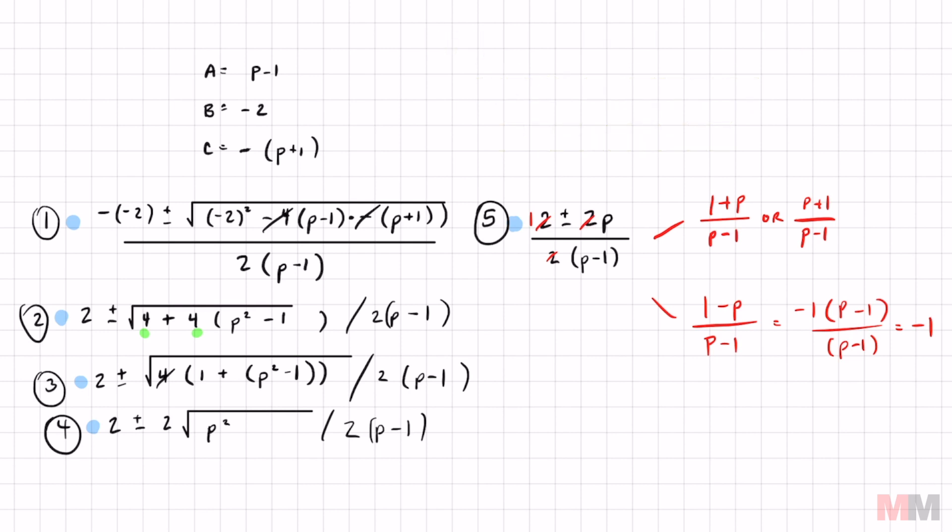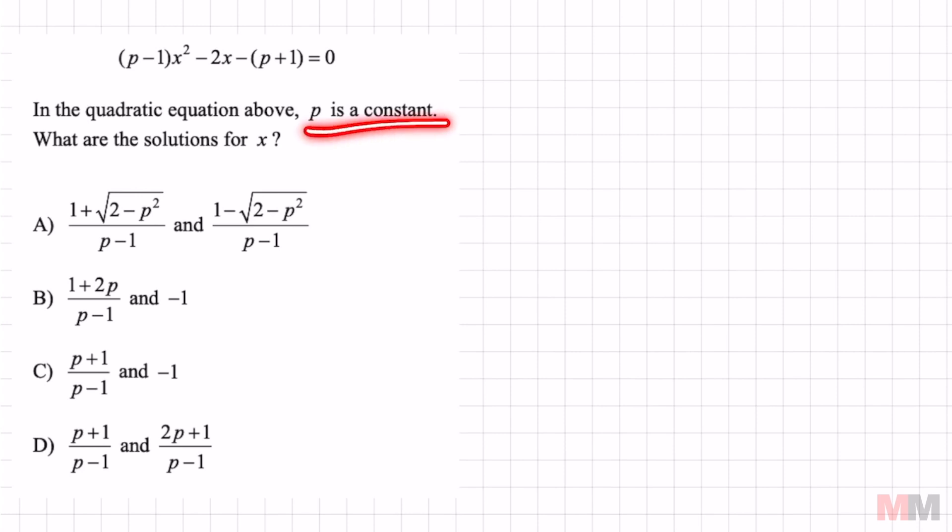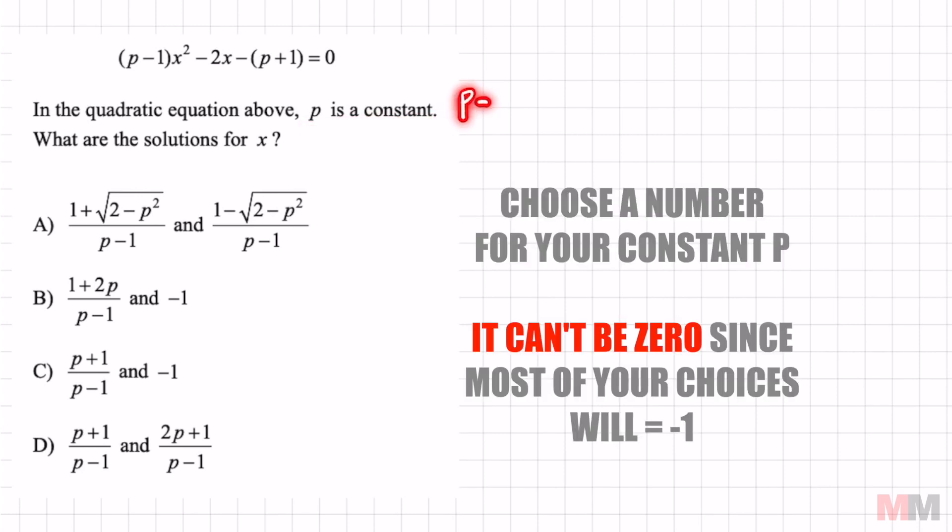But I found a way around this. Here it is. Since p is a constant, we can choose a number for p. The thing is you cannot choose zero. And I did sit there and try to plug in zero. If you plug in zero, you're going to get a bunch of answers that say negative one and it's not going to help us out.